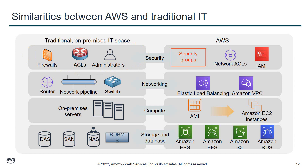Second, we can see that elastic load balancing and Amazon VPC are similar to the router, network pipeline, and switch of the traditional IT center.